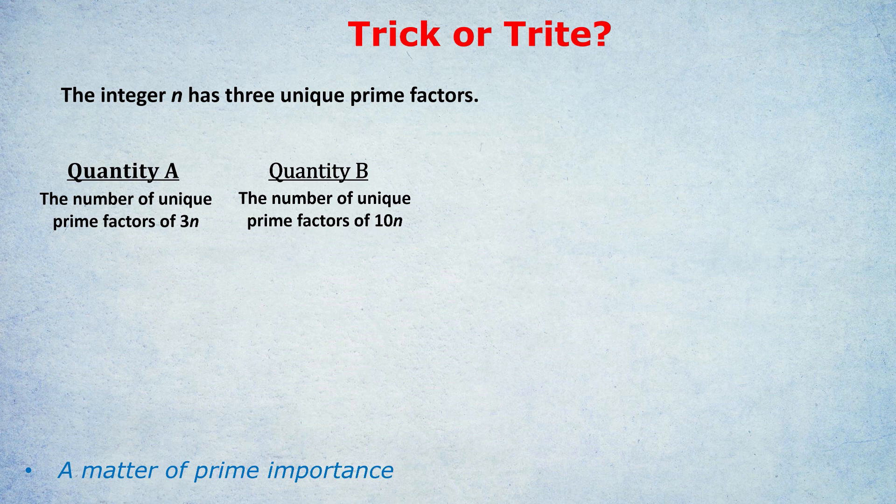So surely quantity B is bigger for that reason. Surely the number of unique prime factors of 10n is more than the number of unique prime factors of 3n, because we're adding two unique factors, rather than one unique prime factor. Well, here's where the trick comes in.